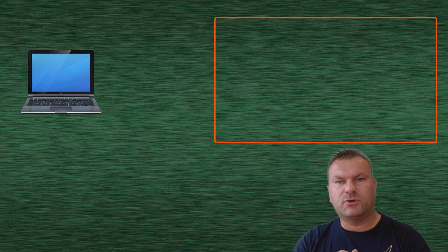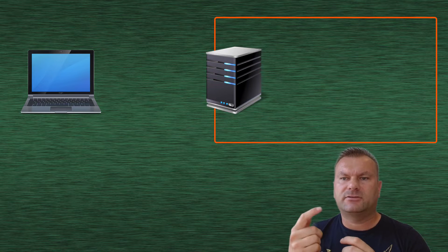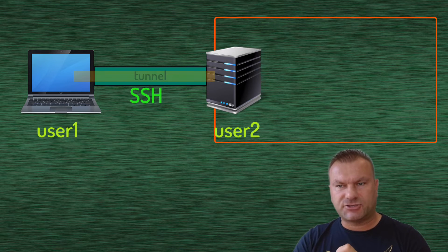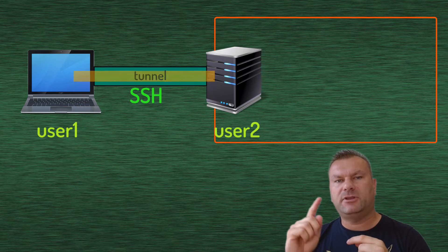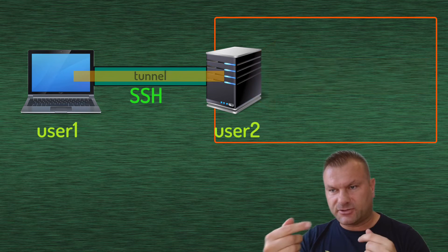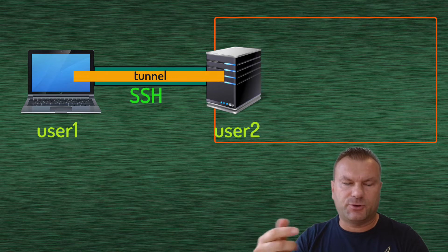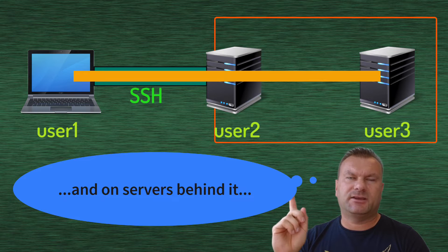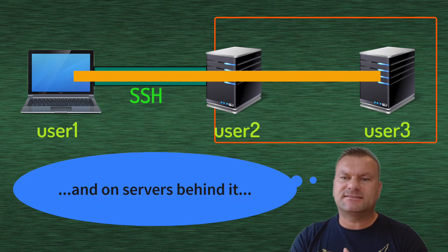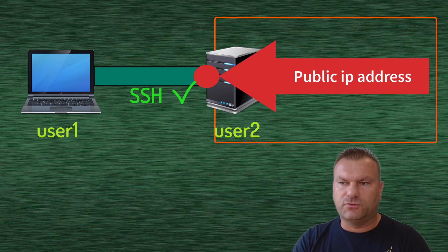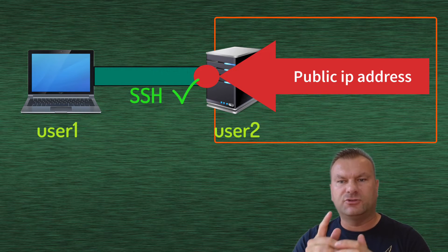We already saw in a previous episode how to create an SSH tunnel with local port forwarding, where we configured a basic SSH connection, configured the users, and then configured an SSH tunnel connecting to a public IP on the remote server. We could then use that tunnel to access other applications listening on other ports on that server. In that example, the remote server had a public IP and had port 22 for SSH open.